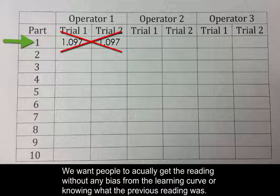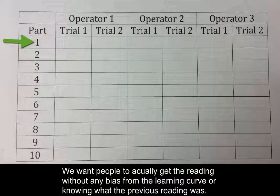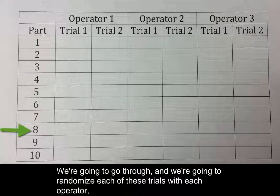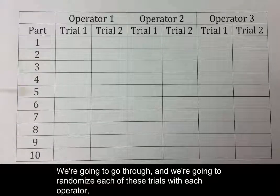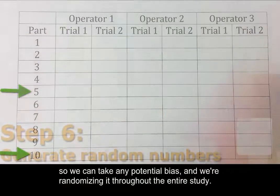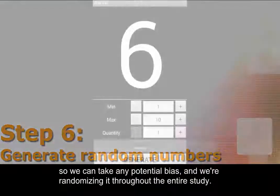We want people to actually get the reading without any bias from the learning curve or knowing what the previous reading was. And so we're going to randomize each of these trials with each operator so that we can take any potential bias and we're randomizing it throughout the entire study.